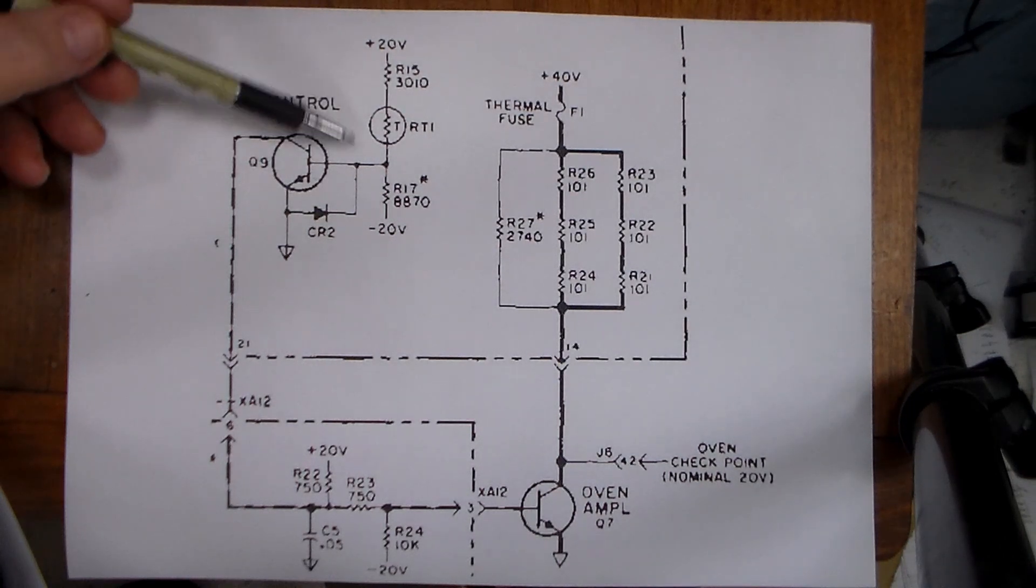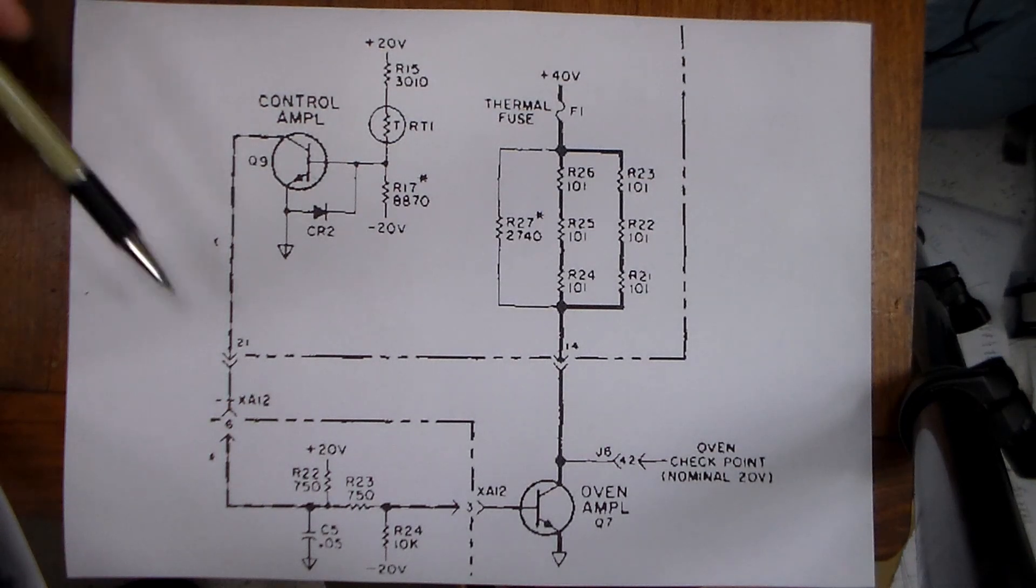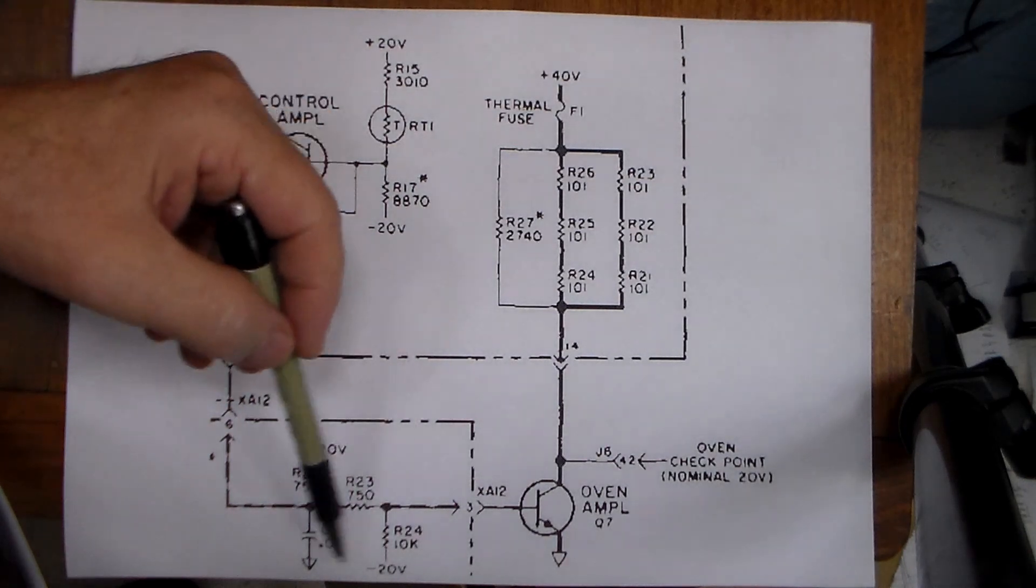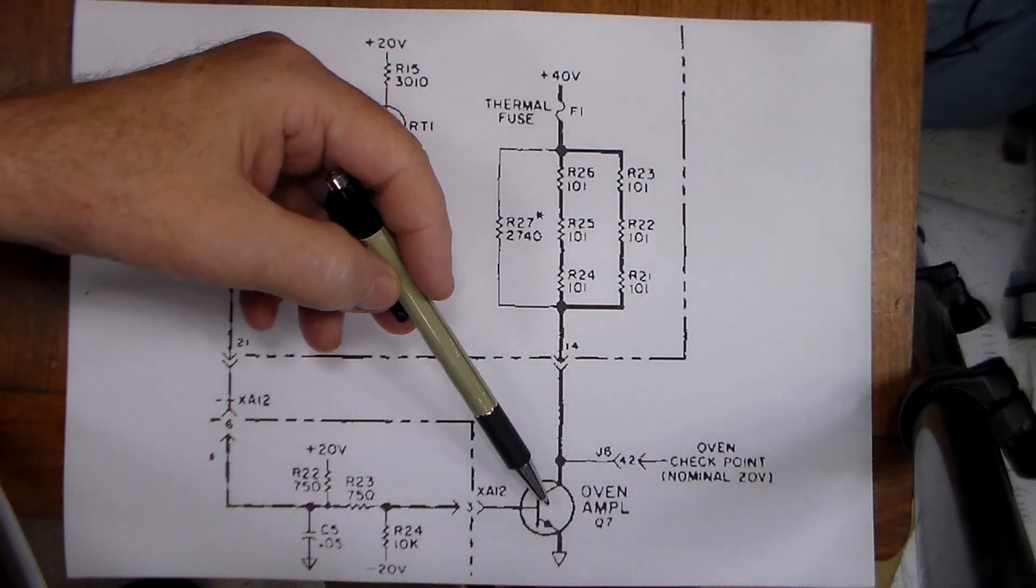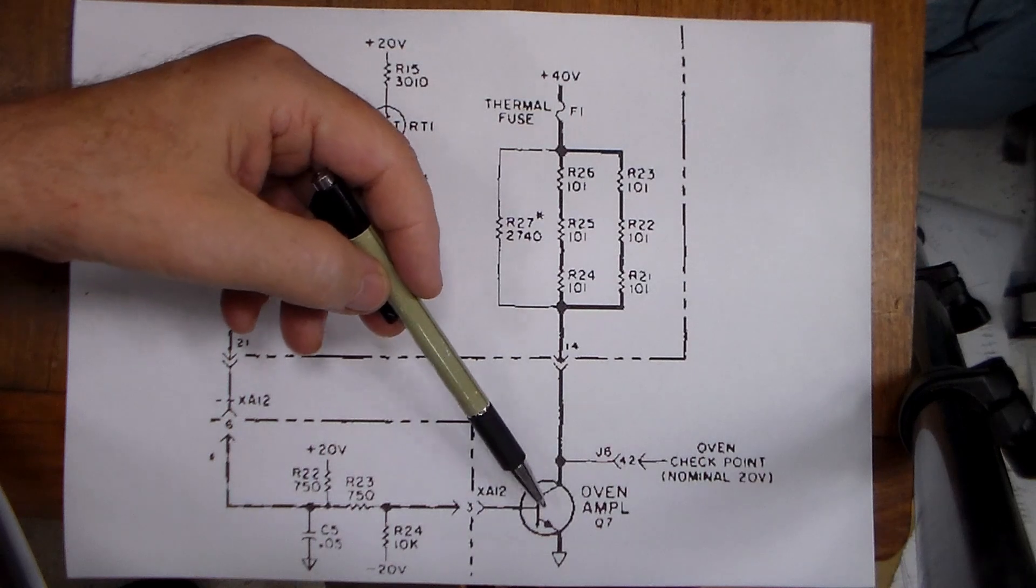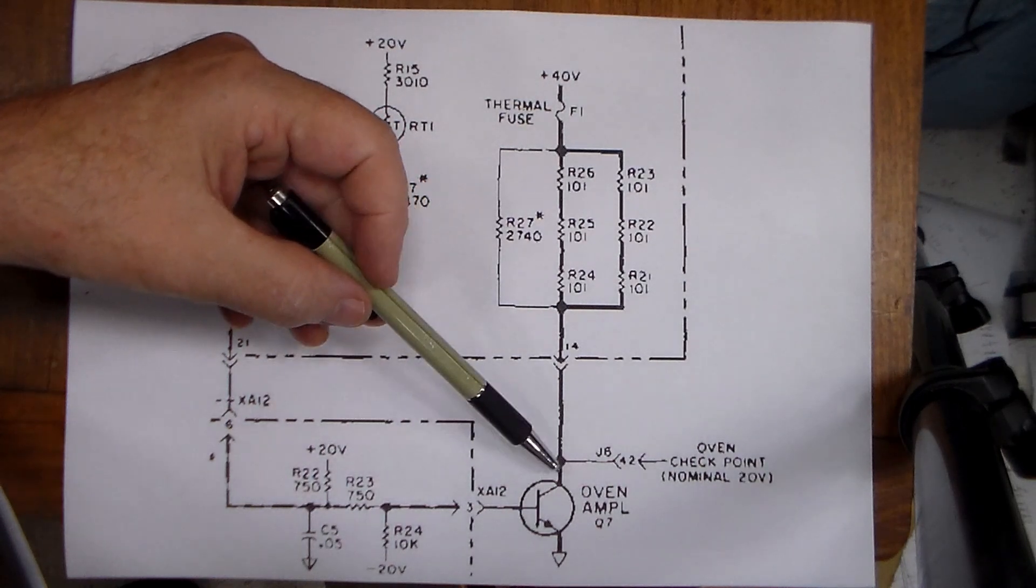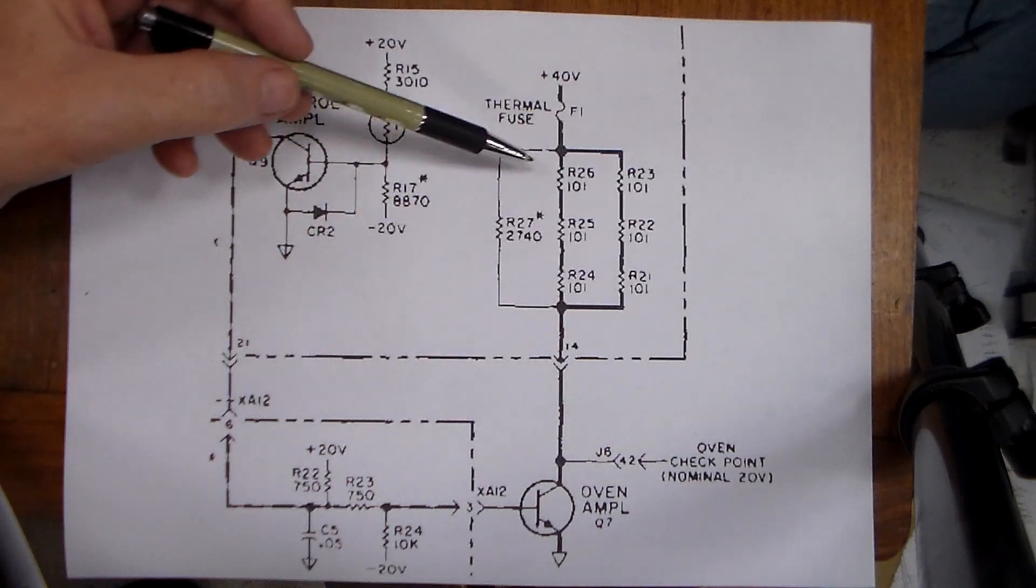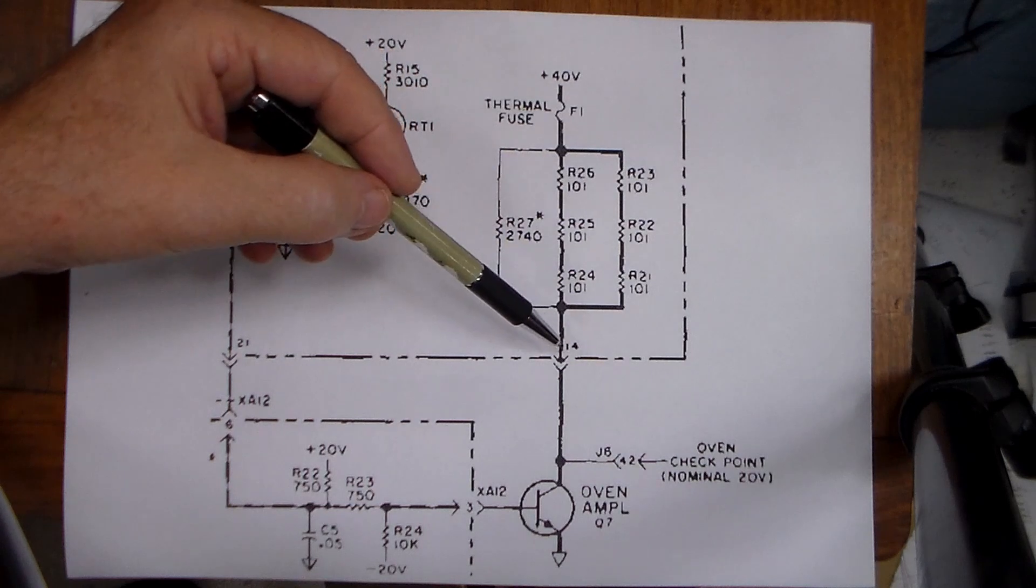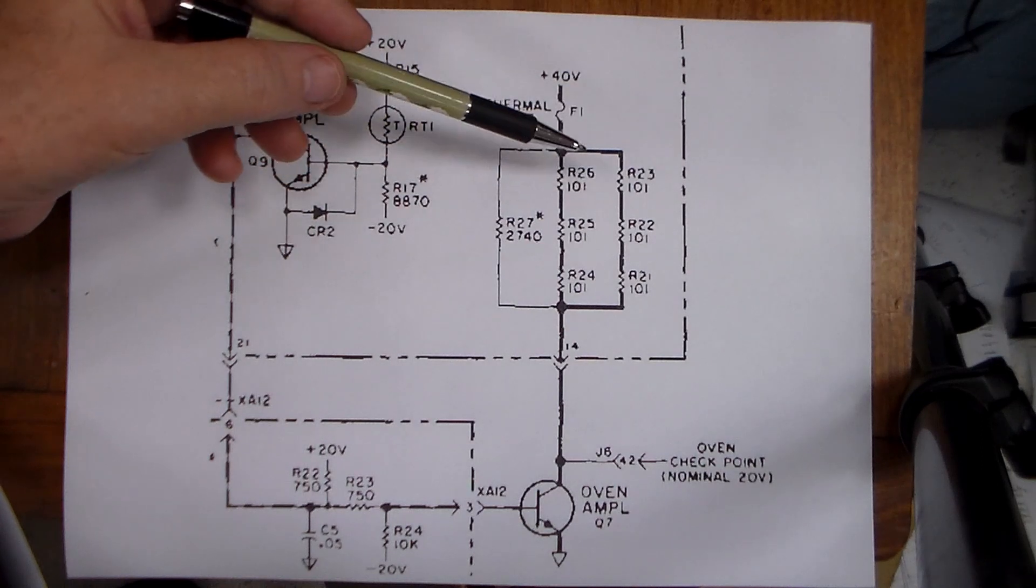We've got control amplifier Q9. And the output of that goes through this biasing network, which then goes to the oven amplifier Q7, which is mounted on the chassis for heat sinking. And then the collector of Q7 goes into a series parallel combination of power resistors that are located on the circuit board in the oven.